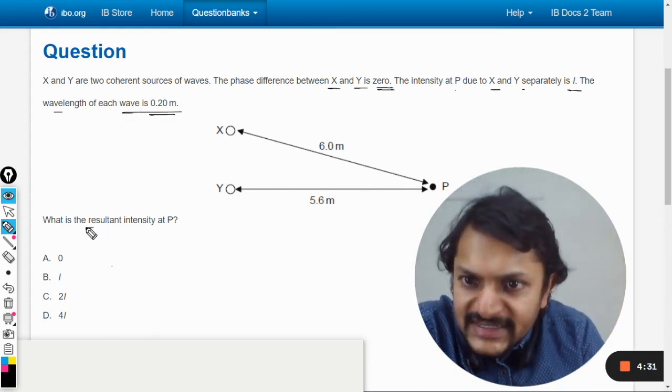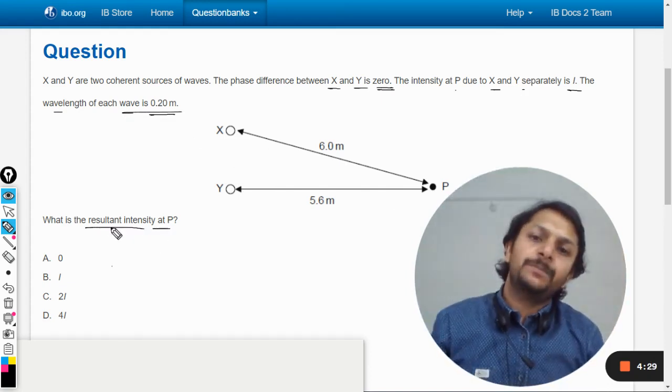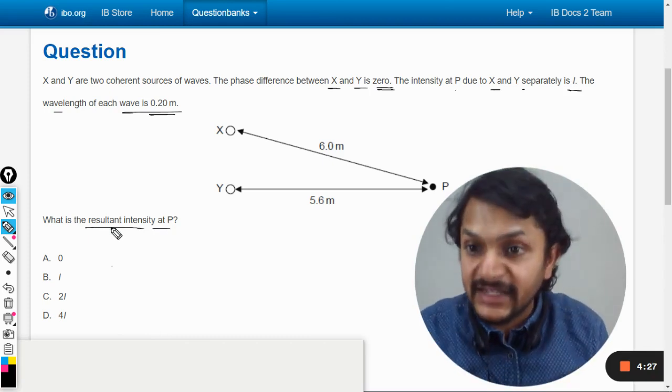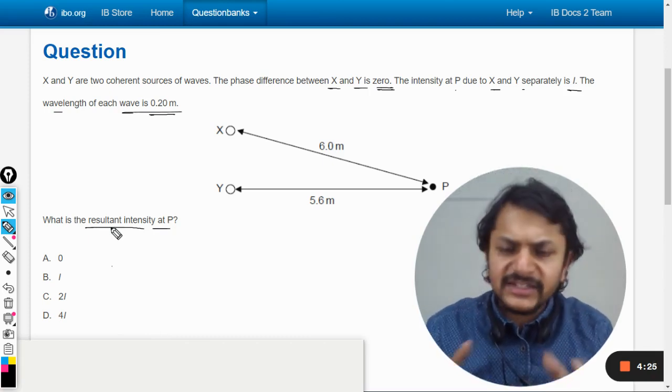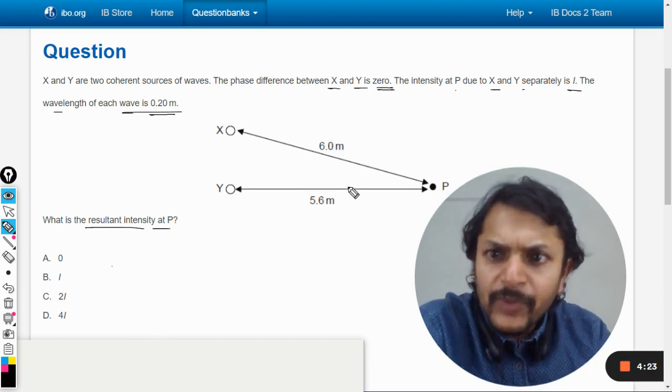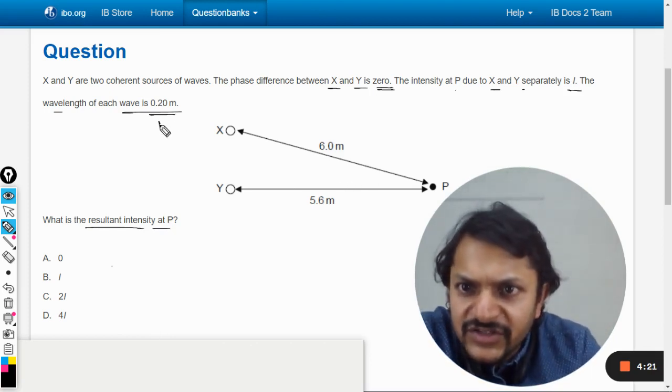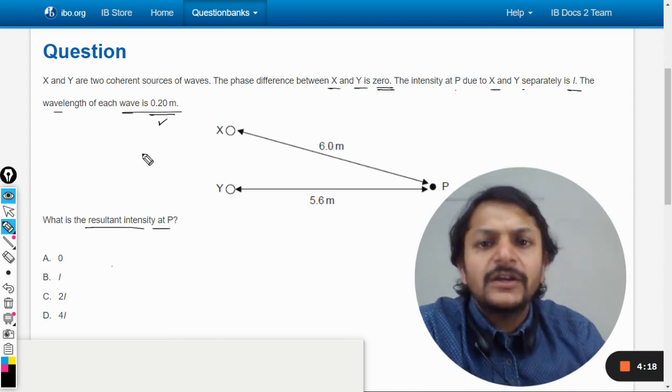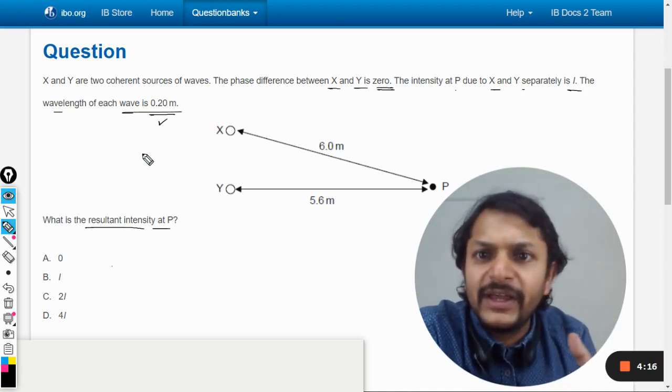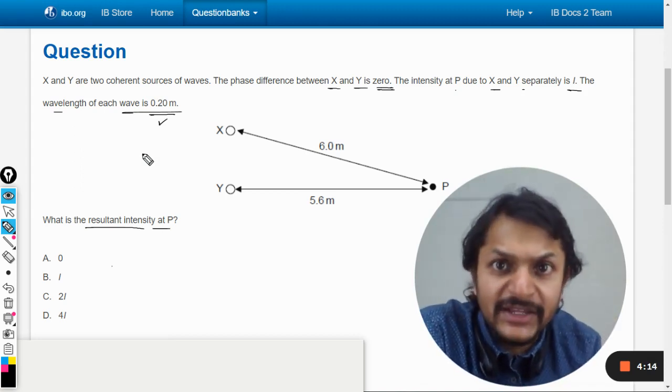Intensity is the same. What is the resultant intensity at the point P? So we want to find the resultant intensity. So let us see what is the resultant intensity now. Okay so the wavelength is given as 0.2. So let us see if constructive interference is taking place or destructive interference is taking place.